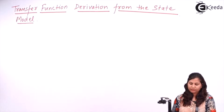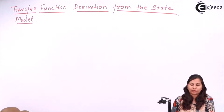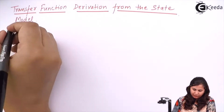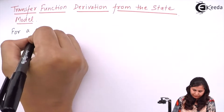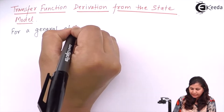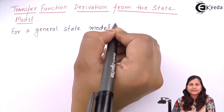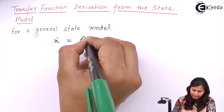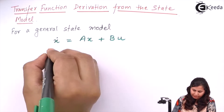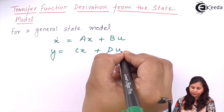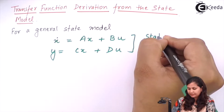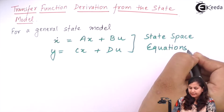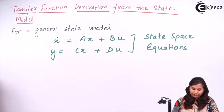We have to derive the transfer function from the state model. In a generalized way, we represent the state model of a system in the form of state space equations. The state space equations are: x-dot equals Ax plus Bu, and y equals Cx plus Du. These two equations combinedly represent the state model of the system.